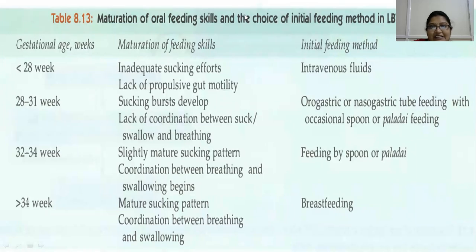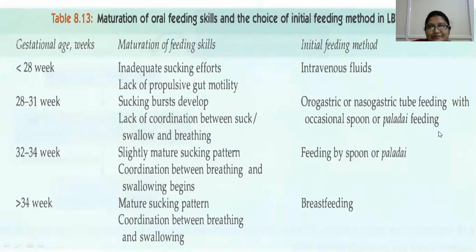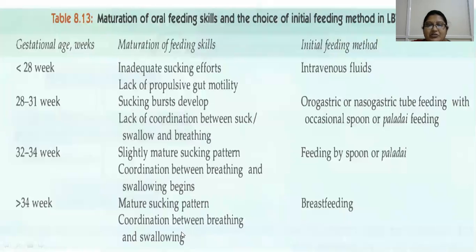Maturation of oral feeding skills and choice of initial feeding method in low birth weight infants: less than 28 weeks — inadequate sucking efforts and lack of propulsive gut motility, so treatment is intravenous fluids. At 28 to 31 weeks, sucking is developing but there is lack of coordination between suck, swallow, and breathing — feed through orogastric or nasogastric tube with occasional spoon or paladai. At 30 to 34 weeks, slightly mature sucking pattern with coordination between breathing and swallowing beginning — feed by spoon or paladai. More than 34 weeks: mature sucking pattern with coordination, so initiate direct breastfeeding. By 37 weeks mature sucking pattern is fully seen.